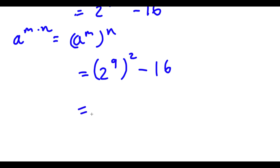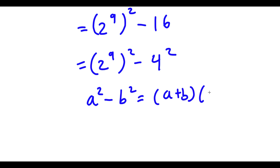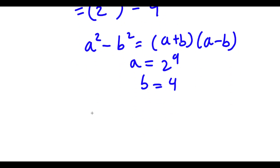Now, 16 is the same thing as 4 squared. So I have 2 to the power of 9, squared, minus 4 squared. Because both of these are to the power of 2, I can apply the difference of squares: if I have something in the form a squared minus b squared, this is equal to a plus b times a minus b. So in this case, a is equal to 2 to the power of 9 and b is equal to 4. So I have 2 to the power of 9 plus 4, times 2 to the power of 9 minus 4.